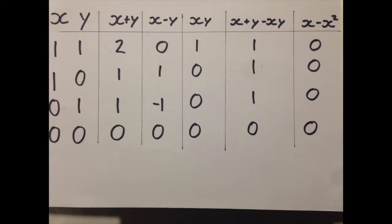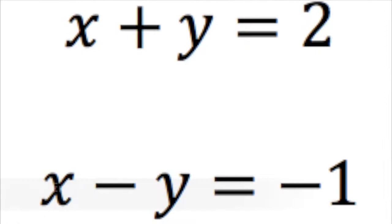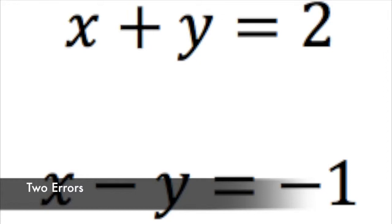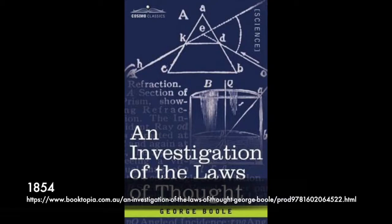To understand the 1 or 0 results in an algebraic aspect, different expressions for x and y can be used to have the final results of 1 and 0 for most simple equations. As you can see, there are two errors in using Boole's logic in algebra, where x plus y equals 2, and x minus y equals negative 1. This was all published in his 1854 work, An Investigation of the Laws of Thought, on which are Founded the Mathematical Theories of Logic and Probabilities.